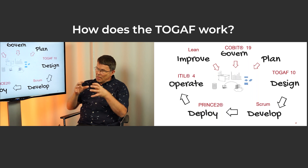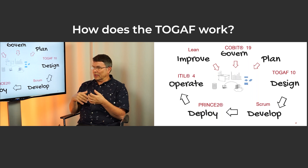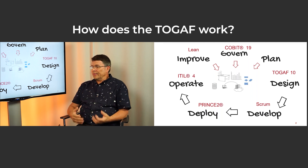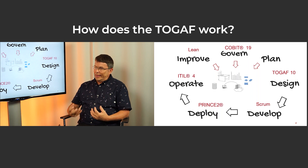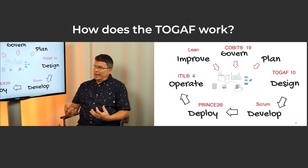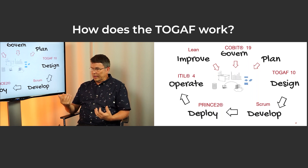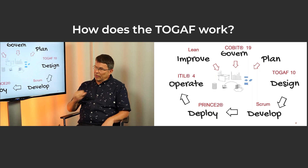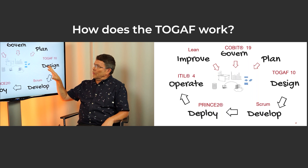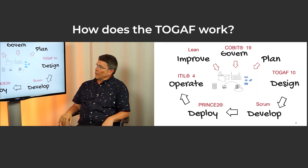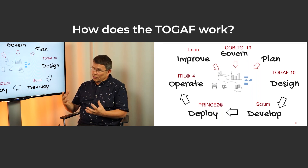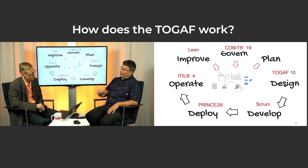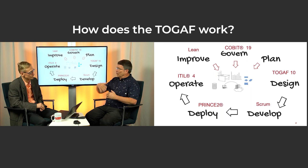The structure of TOGAF is that there's a method called the ADM — the Architecture Development Method. And then there's a number of separate documents describing different parts of it. There's a document describing how to do business scenarios, one part describing how to create a repository for TOGAF, and so on. It's modular — a number of different independent documents — and TOGAF is a collection term for all of these.